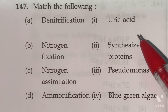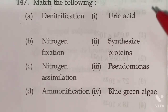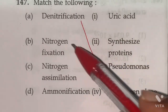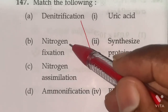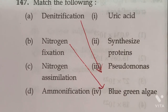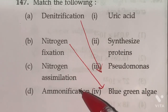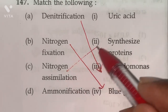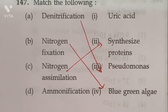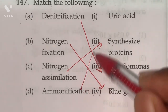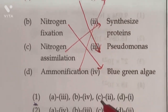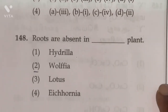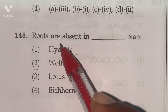Question 147: Among the following, denitrification is carried out by Pseudomonas; nitrogen fixation is by blue-green algae; nitrogen assimilation is the synthesis of proteins; and ammonification involves uric acid. According to this, option one is the right answer.